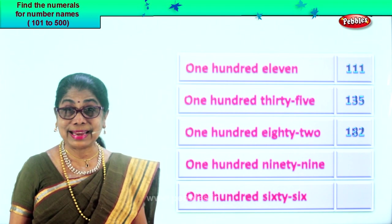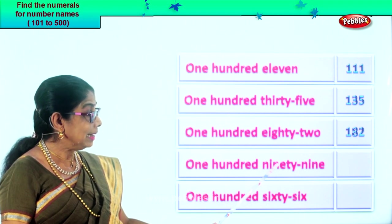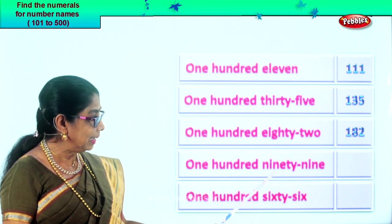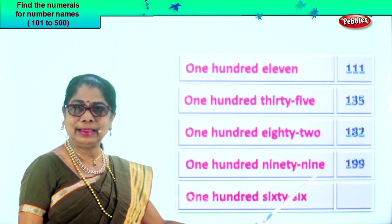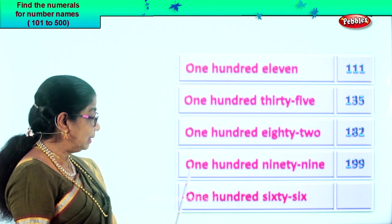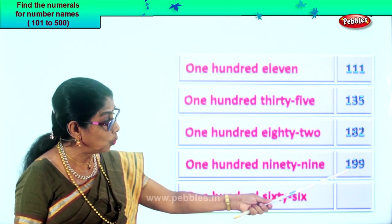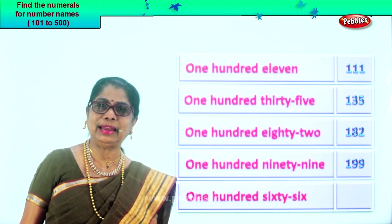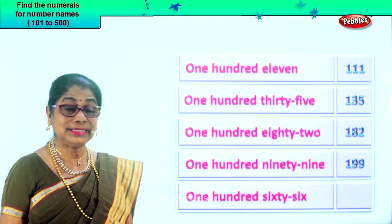Shall we look at the next? Next number name. One hundred ninety-nine. One in the hundredth place. Ninety-nine — nine in the tens place, nine in the ones place. Now let's write down: one hundred ninety-nine. Both should be the same. Reading aloud, you will not make a mistake. So you have done the numeral correctly.